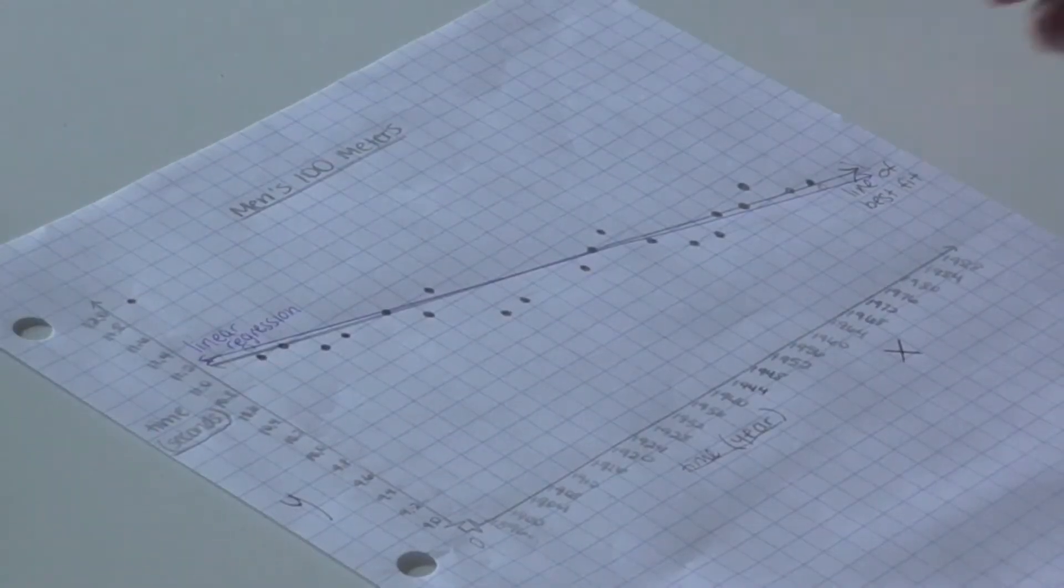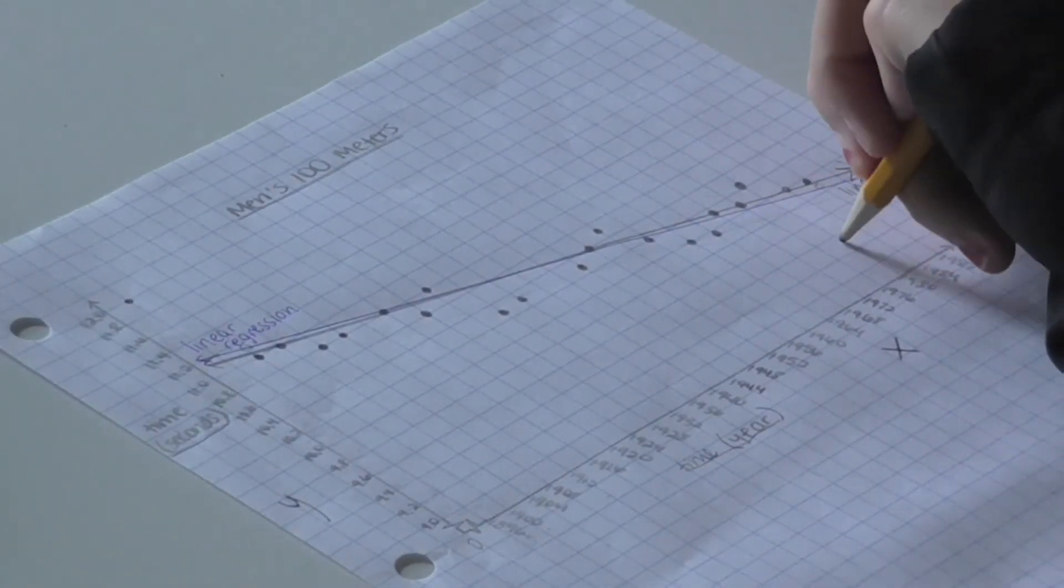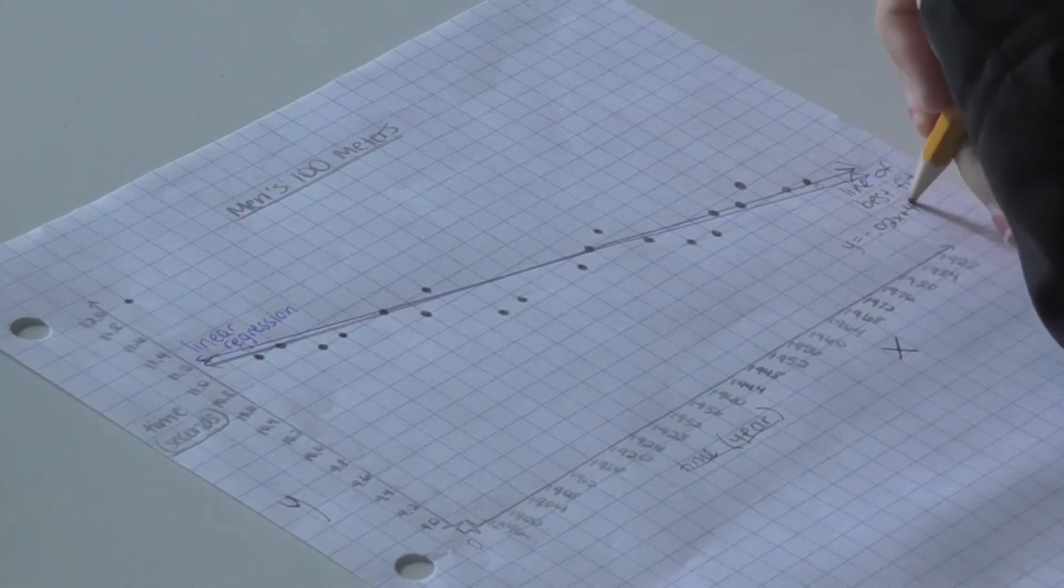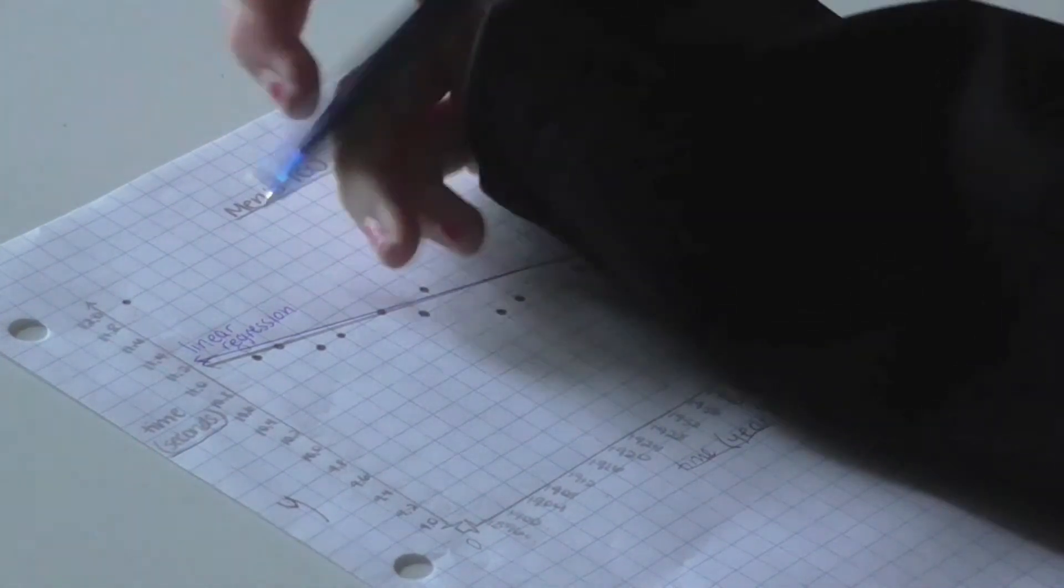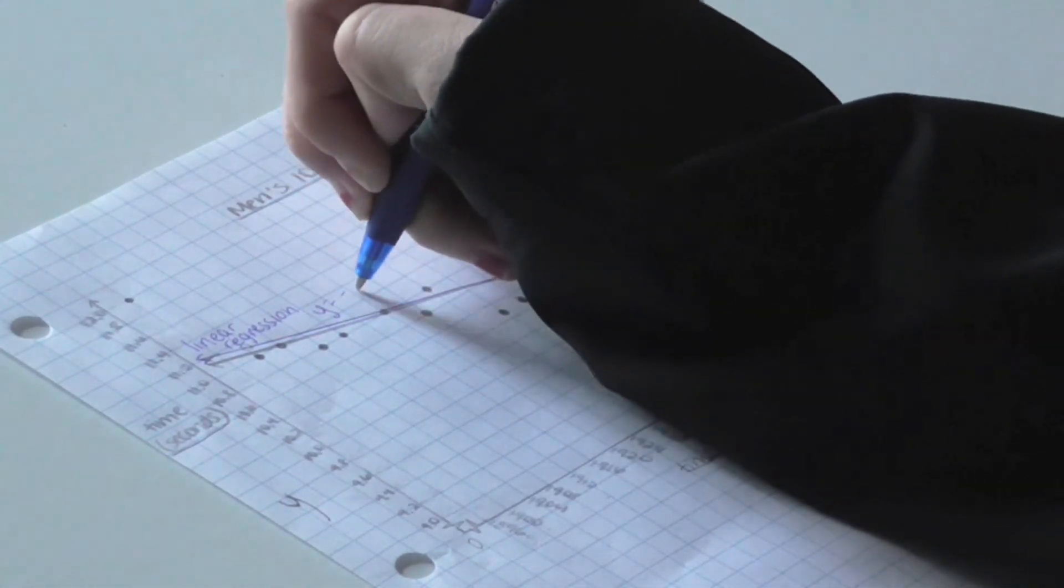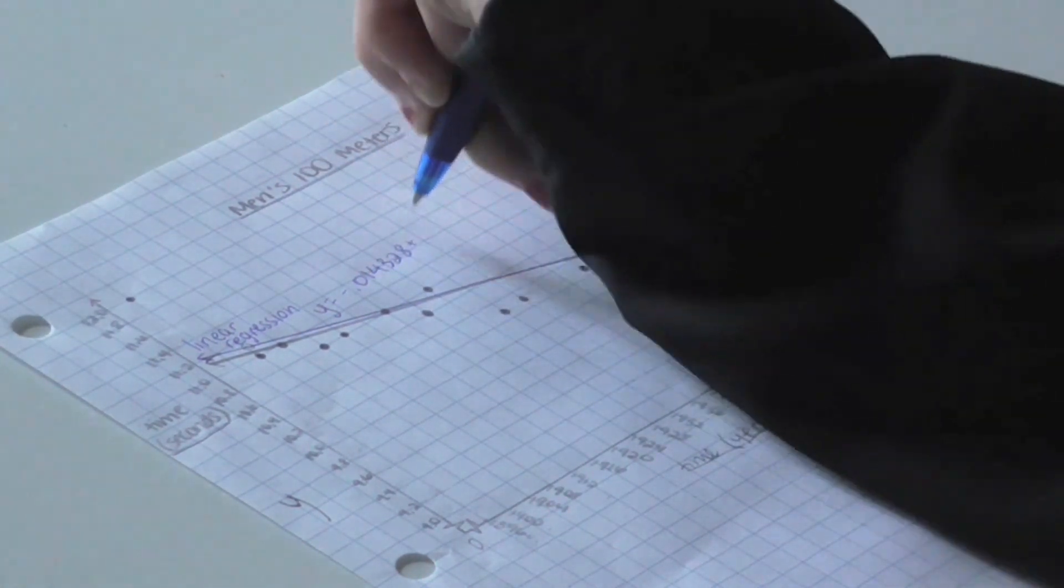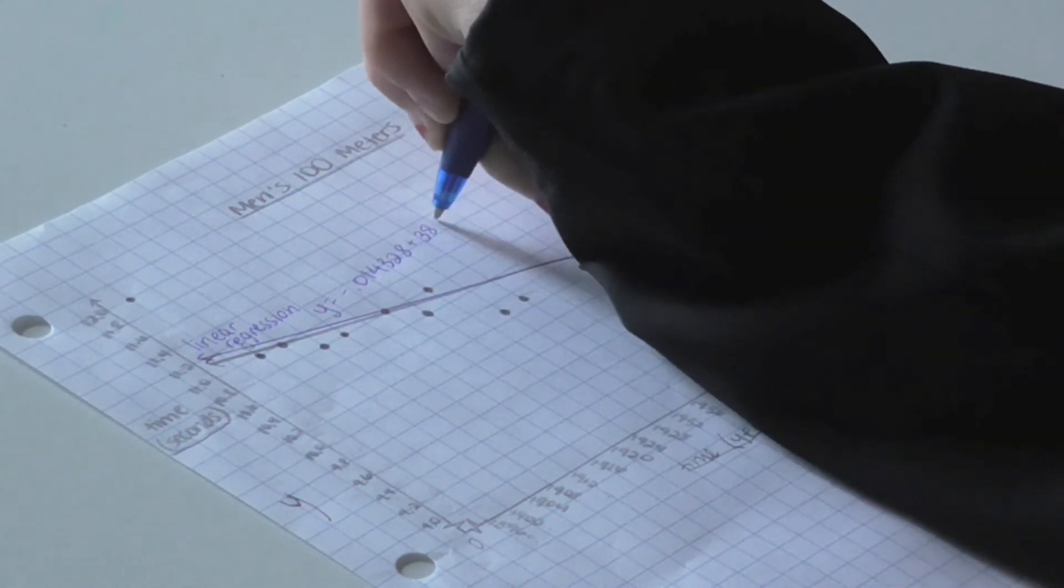To recap, this is the line of best fit that we drew, and this is its equation, y equals negative 0.02x plus 49.58. And this is the linear regression that our calculator came up with. This equation is y equals negative 0.014328x plus 38.3245.